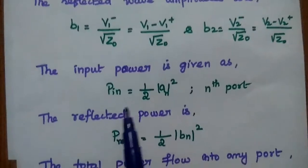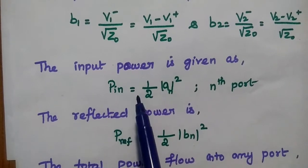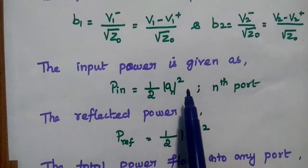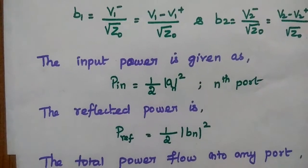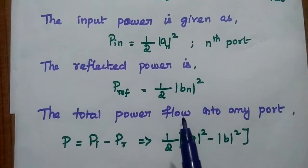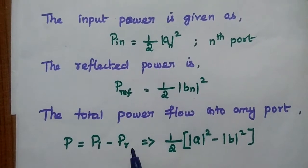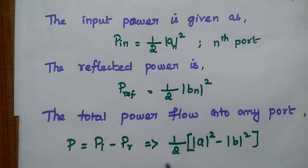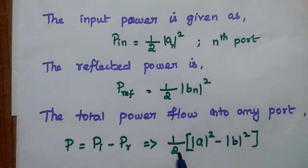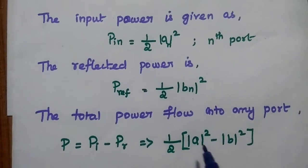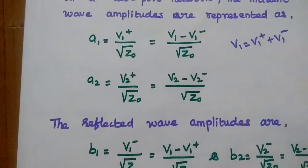The input power for the nth port is P_in = (1/2)|An|², and the reflected power is P_ref = (1/2)|Bn|². The total power flowing into any port equals incident power minus reflected power: P_total = (1/2)(|A|² − |B|²). Here A and B are the normalized wave amplitudes.